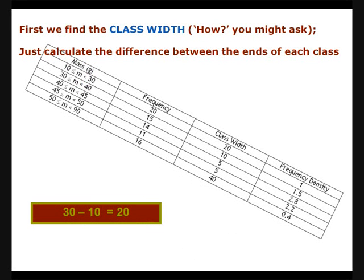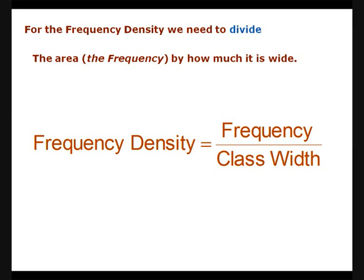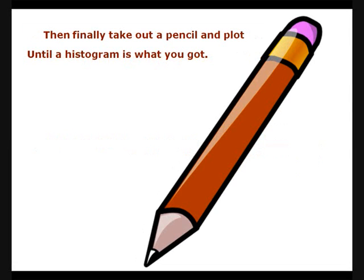First we find the class width. How you might ask? Just calculate the difference between the ends of each class. For the frequency density we need to divide the area, the frequency by how much it is wide. Then finally take out a pencil and plot until a histogram is what you got.